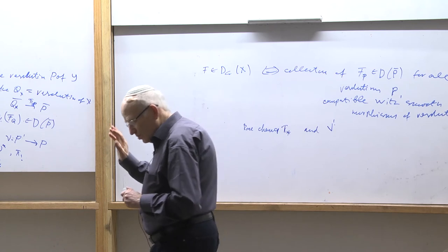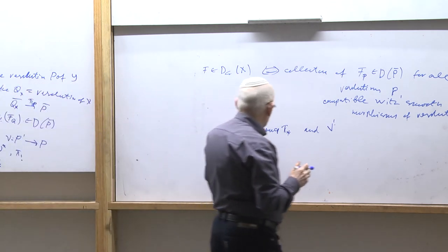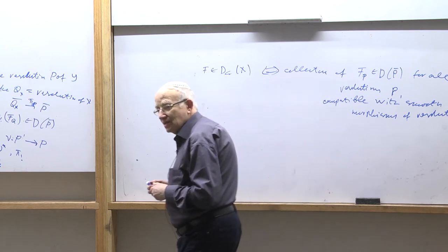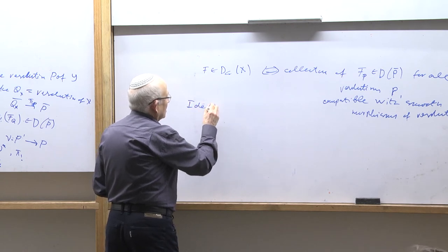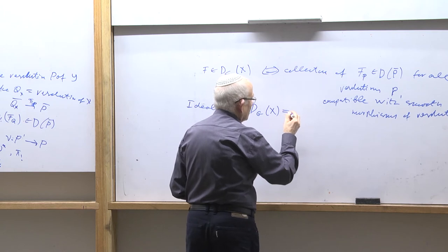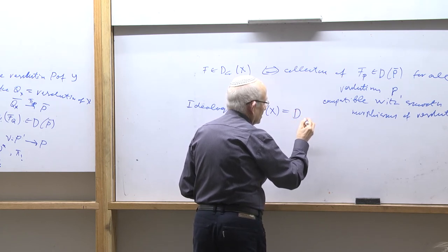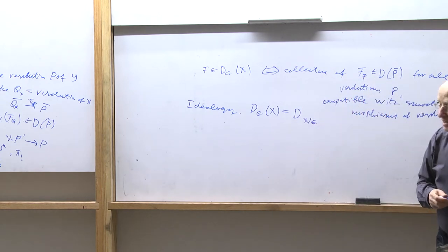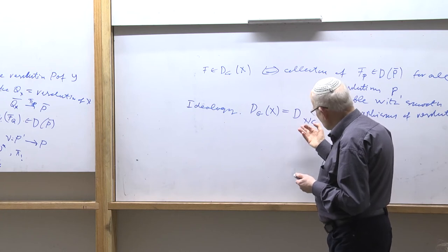We have some problems with some of the functors, in particular the external tensor product. The claim is that all functors are defined straightforwardly — but not all. Now let's look at the tensor product functor — here one should be more careful. The ideological idea is that the right category D_G(X) should be thought of as the derived category on the quotient stack X/G.